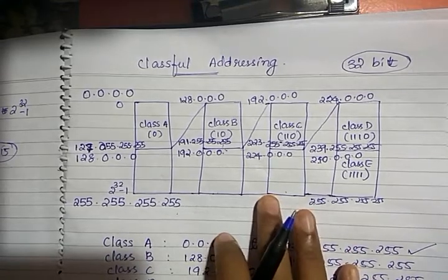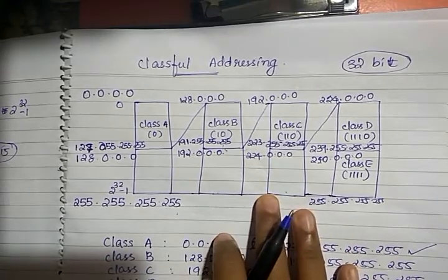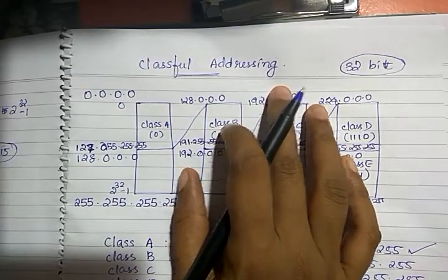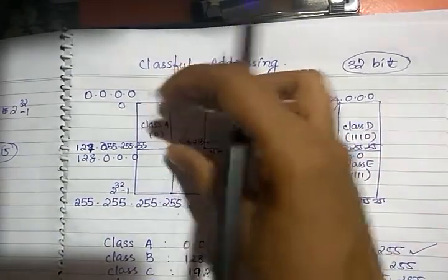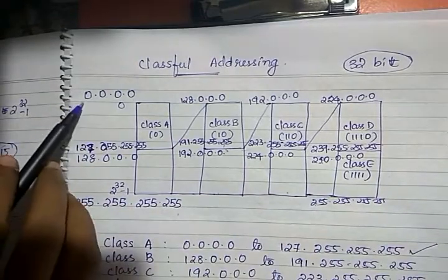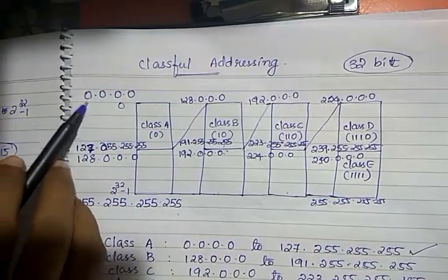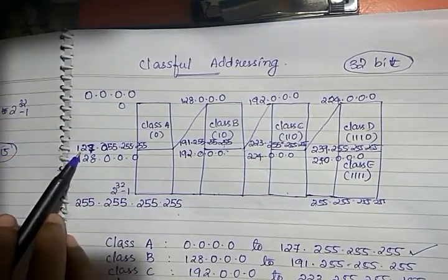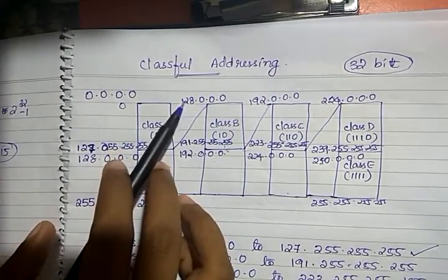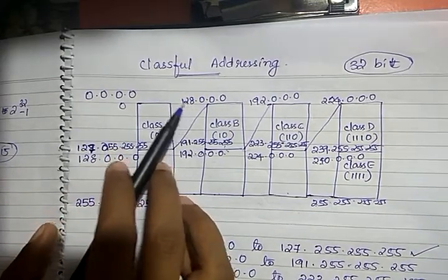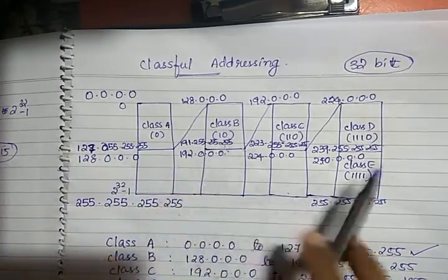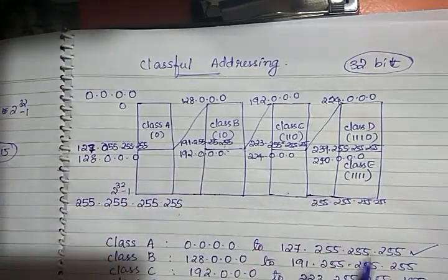Let's continue our discussion on IP addressing, particularly classful addressing. We have already seen the classification like Class A, B, C, D and the range of each address. For example, if the most significant byte is within the range 0 to 127, it is a Class A address. Similarly, if the most significant byte is within the range 128 to 191, it is a Class B address. Like that you can classify.